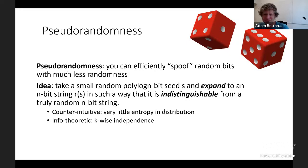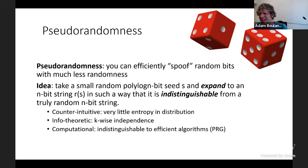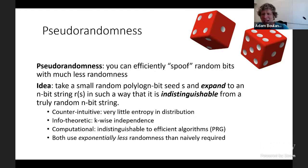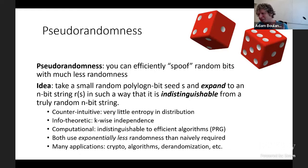Sometimes people consider pseudo-randomness with respect to information-theoretic security—these are called k-wise independent distributions, which look random if you only look at a subset of K bits. There's also the computational form of pseudo-randomness: ensembles of random strings indistinguishable from truly random strings to any efficient algorithm. This is the notion of a pseudo-random generator, and both types use exponentially less randomness than naively required, giving rise to applications in cryptography, algorithms, and derandomization.